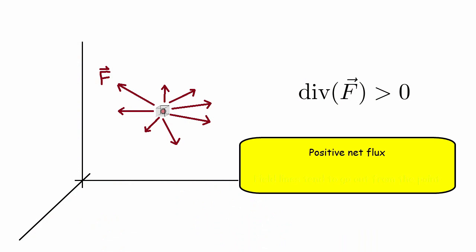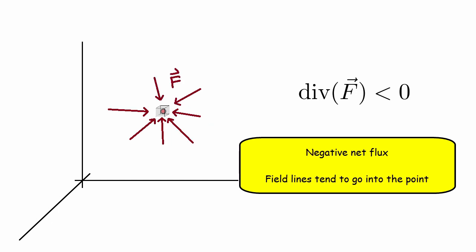If the divergence about a point is positive, that means there is a net positive flux going through the volume surrounding that point. Which means the field lines are tending to go outwards away from this point. Whereas a negative divergence means the opposite, that the field lines are sort of going into this particular point.